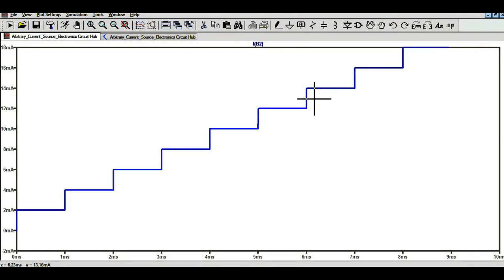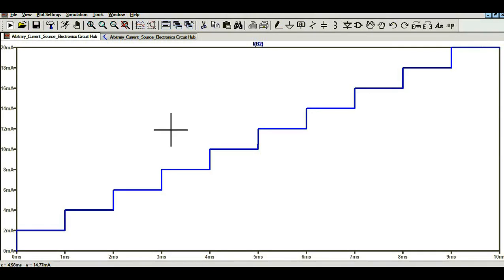Now you can see how your current is rising, and at some point of time you can see it stopped running. And now you can see initially your current is 2 milliampere, but after 1 millisecond your current rolls up. And likewise you can see it is incrementing in the form of a step, and now you can see at the end of 10 millisecond your current rolls up to 20 milliampere.